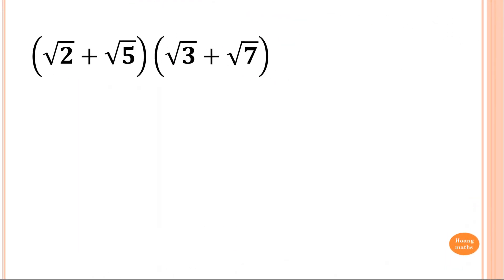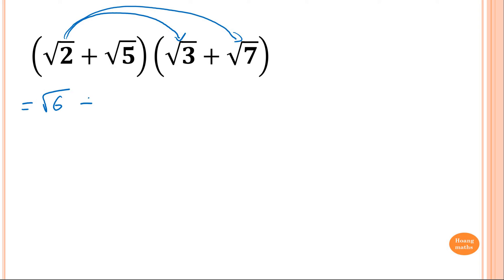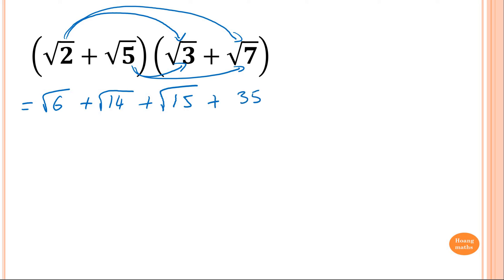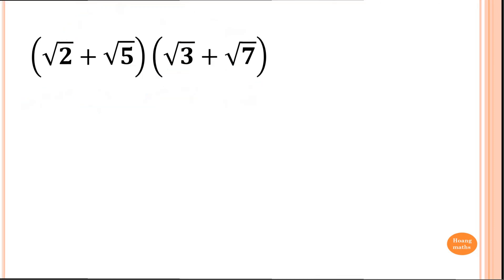Now this is a binomial product. I'm just expanding normally. 2 times root 2 times root 3 gives square root of 6. Root 2 times root 7 — thinking 2 times 7 is 14 — gives square root of 14. 5 times 3 is 15, so plus square root of 15. And 5 times 7 is 35, so plus square root of 35. I can't simplify any further because none of them have a square number in them.